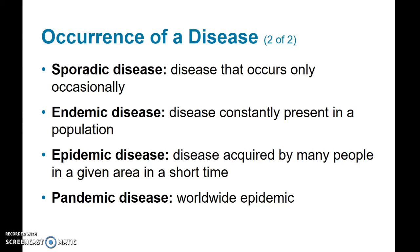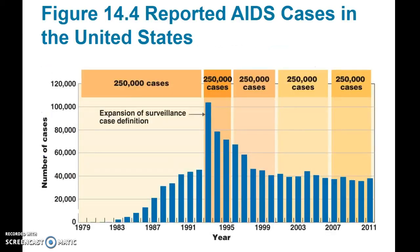Sporadic diseases occur very rarely or occasionally. Endemic diseases, like the cold or flu, are almost always present within a population. Epidemic diseases are diseases that many people acquire in a particular geographic area over a short period of time. A pandemic disease is the same as an epidemic, except it is worldwide. Here is a graph showing the incidence and prevalence of AIDS from 1983 to 2011, with the peak just before the mid-1990s.